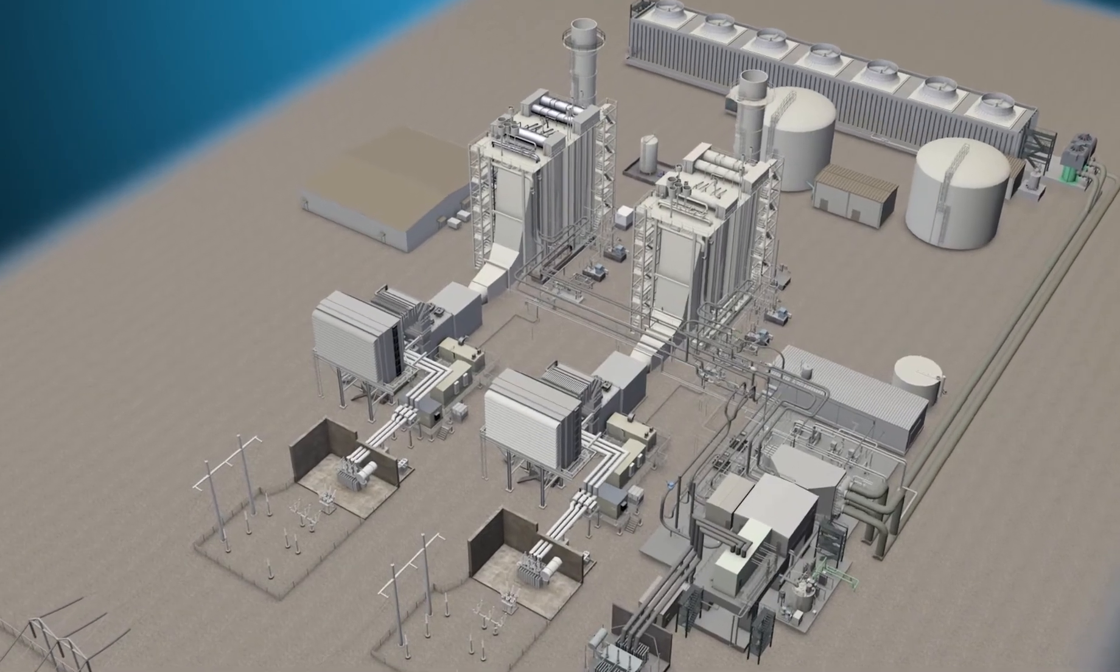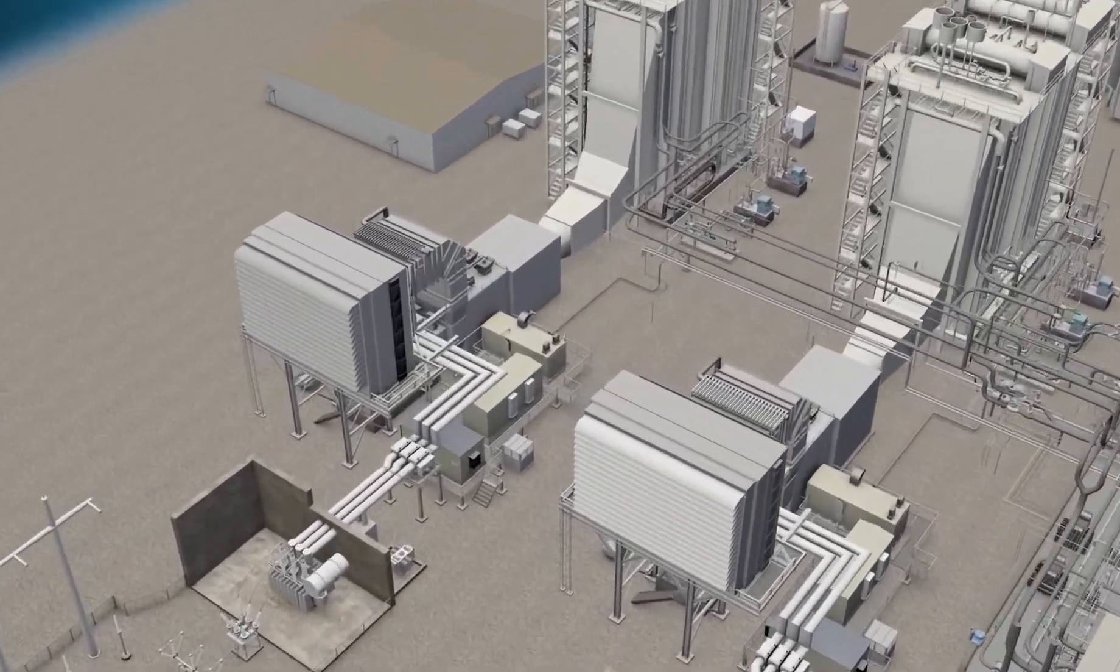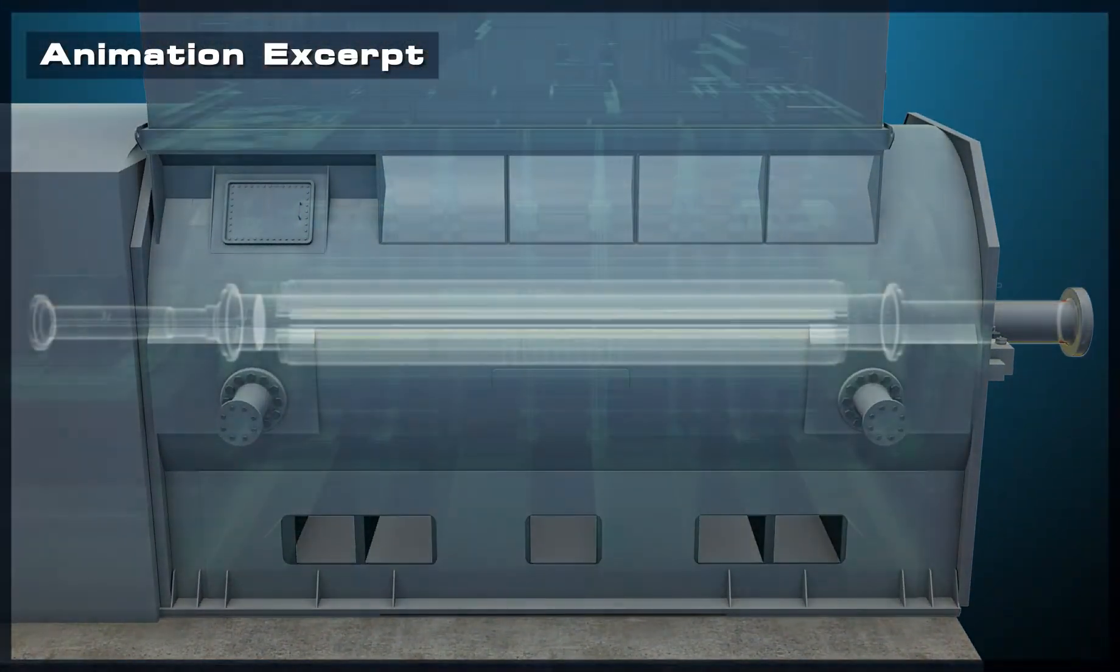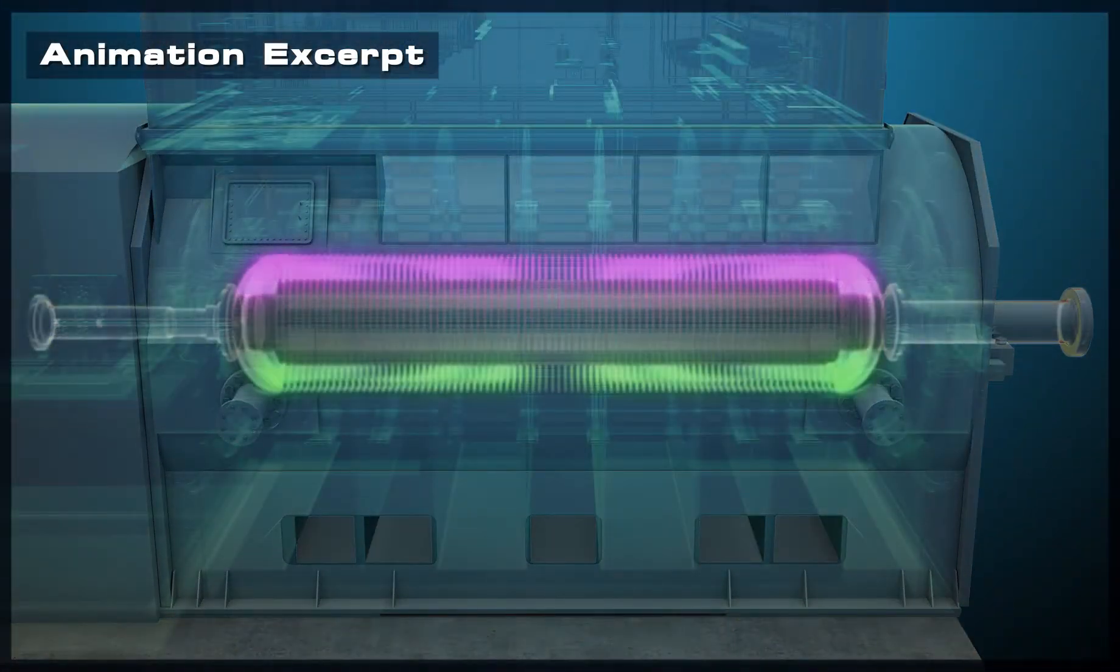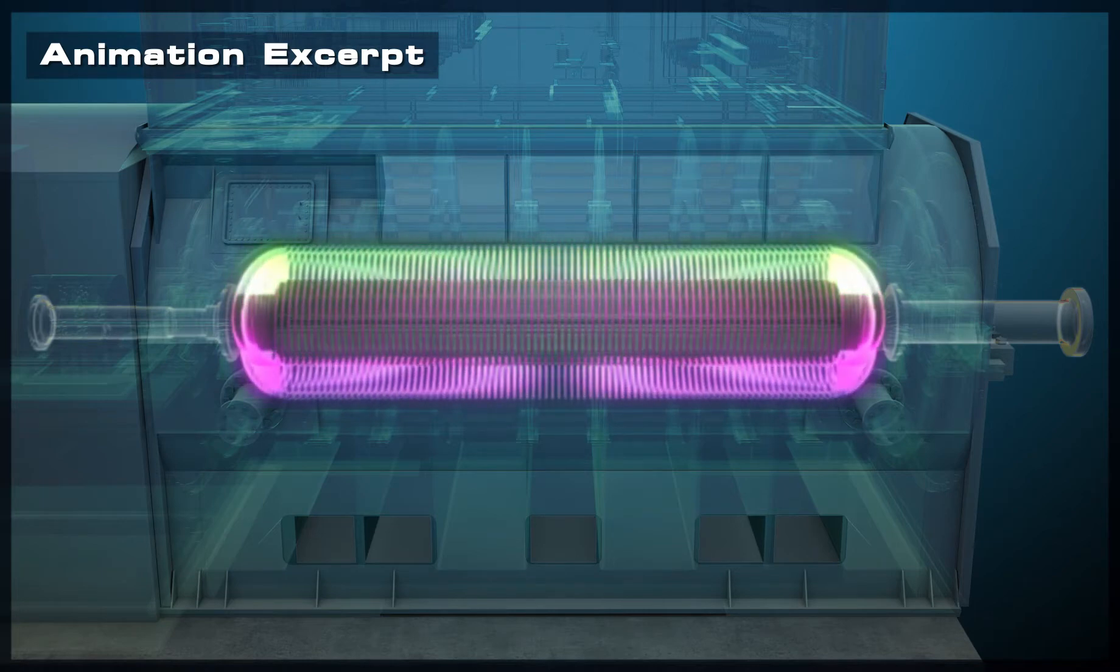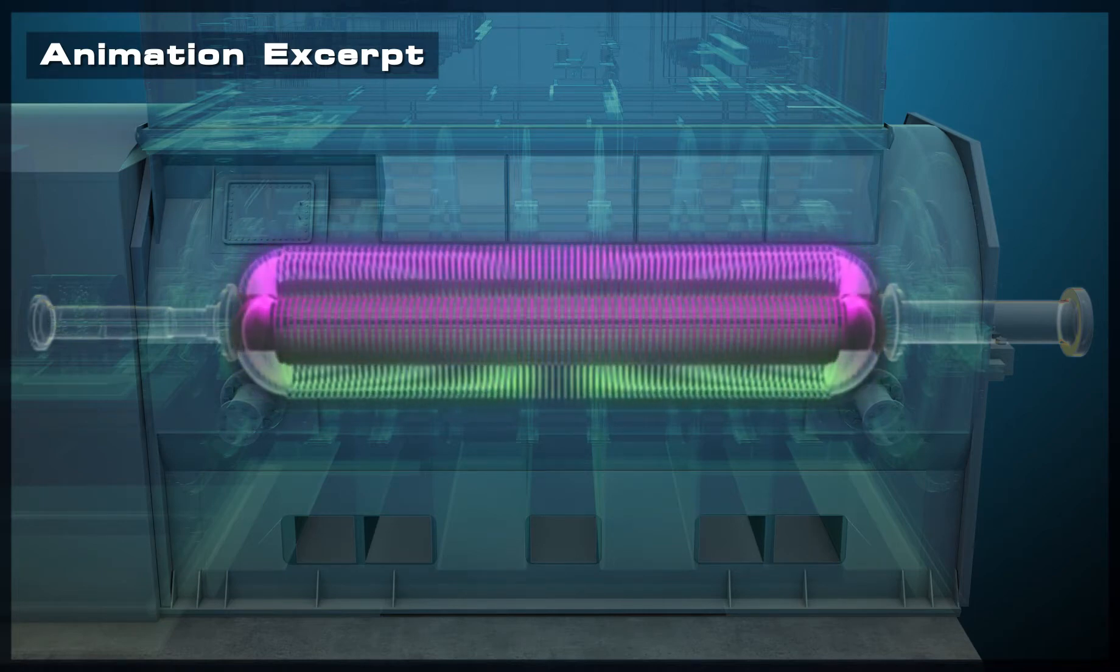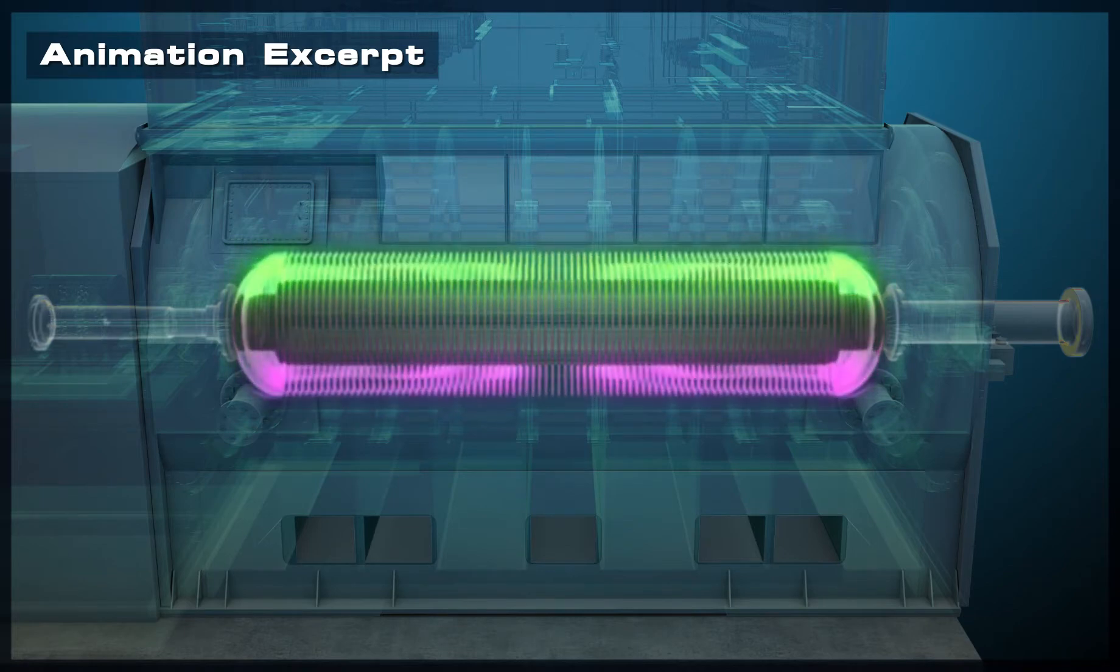TTP also provides component-level training courses, such as generators. The rotor of the generator is used to provide a rotating magnetic field which will be used to induce a voltage on the stator. The rotor is also commonly referred to as the field.